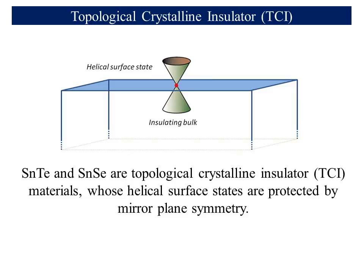Topological crystalline insulators are newly discovered materials that behave as insulators in their bulk, whereas they have metallic surface states. Unlike topological insulators, these states are protected not by time reversal symmetry, but by the crystal symmetry. It has been both theoretically and experimentally proven that tin telluride and tin selenide are topological crystalline insulators, whose surface states are protected by their mirror plane symmetry.